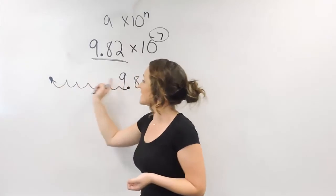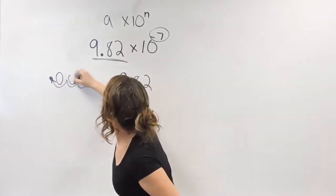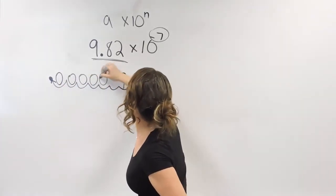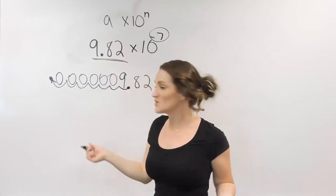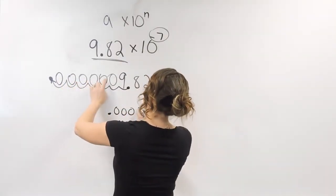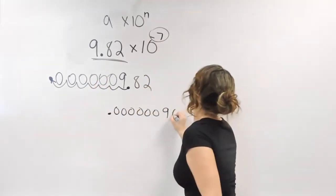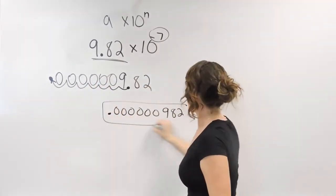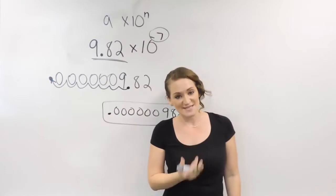All of these little blank spaces here, fill those in with 0s. And this is your new decimal. So we have 0.000000982. This is what my number would look like in standard form.